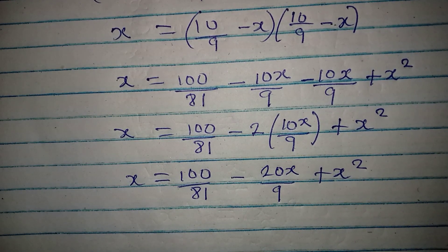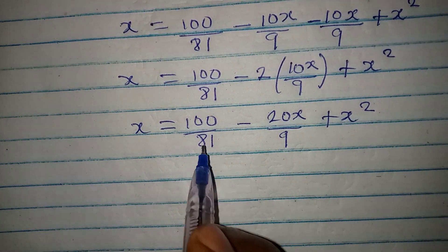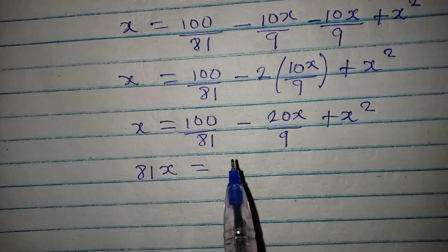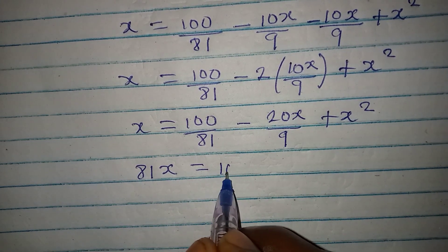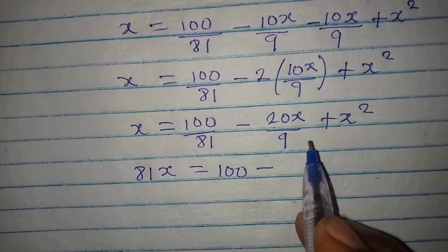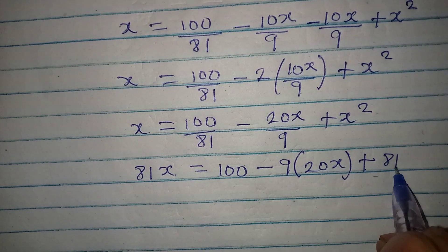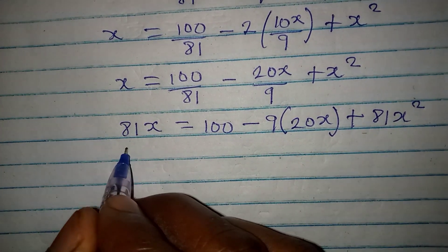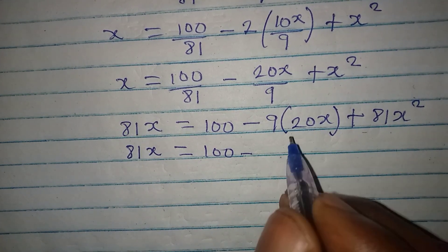The next step is to clear the fraction by finding the LCM, which is 81. Multiplying everything by 81, it cancels from the fraction, giving us 100. Then 81 divided by 9 is 9, so 9 times 20x gives 180x, then plus 81x squared. So we have 81x equal to 100 minus 180x plus 81x squared.